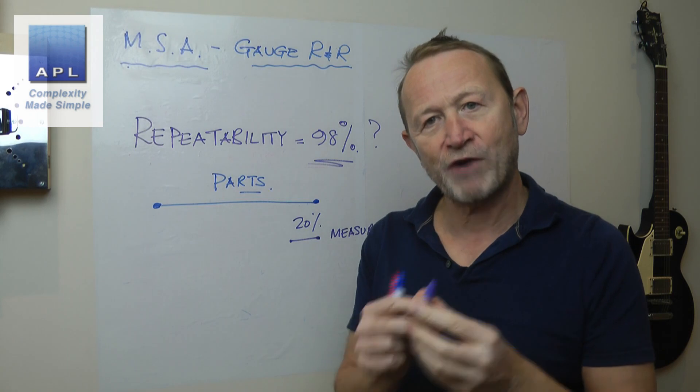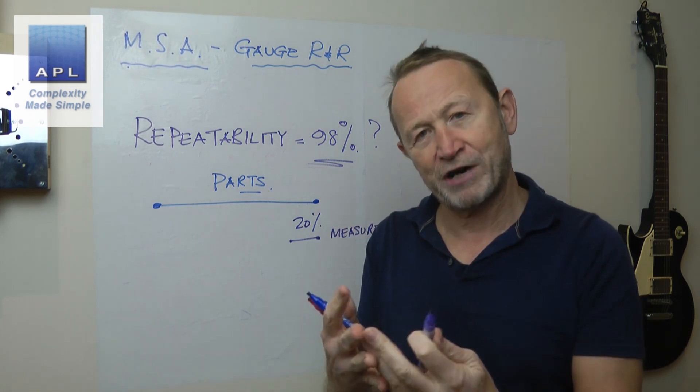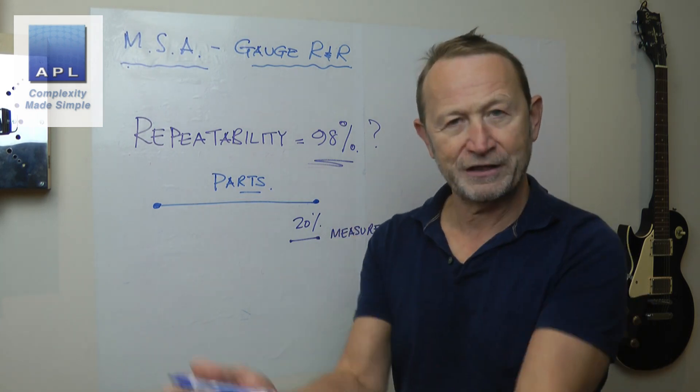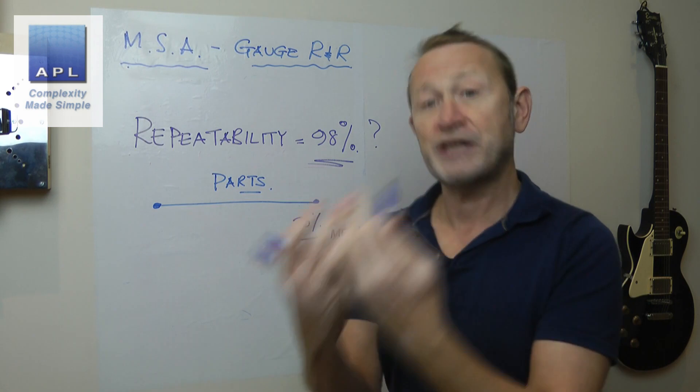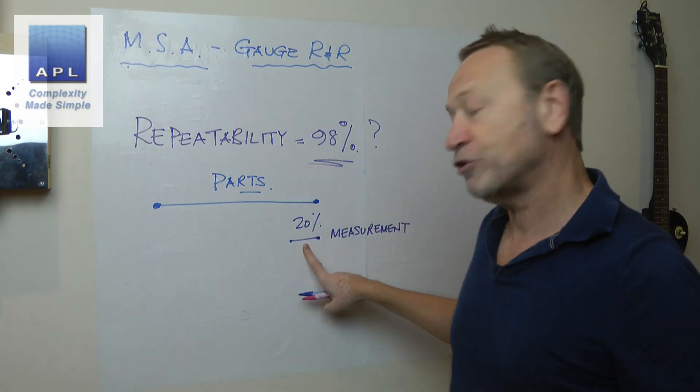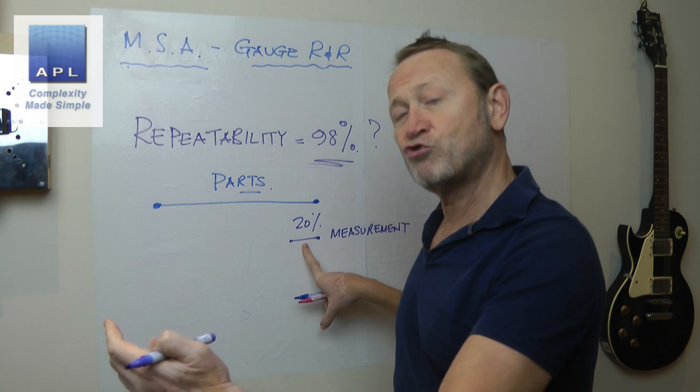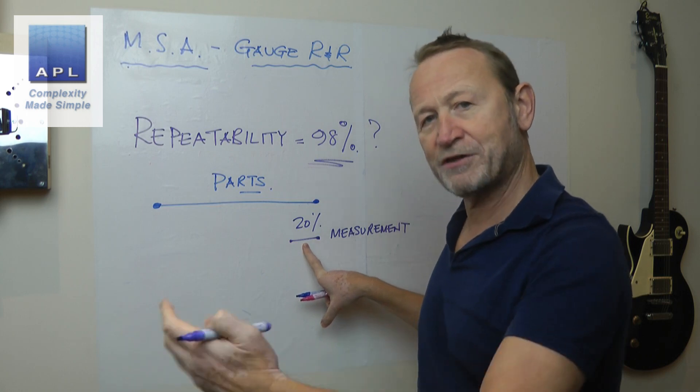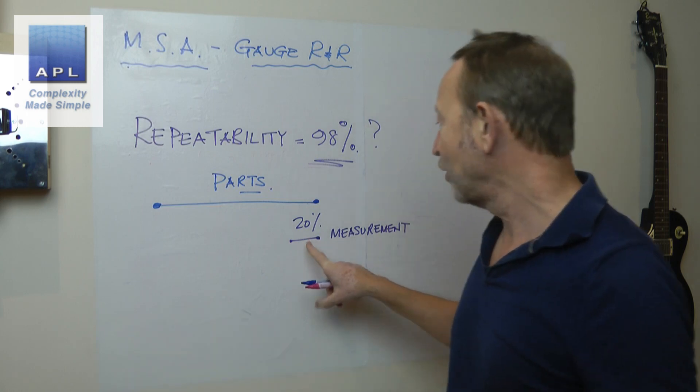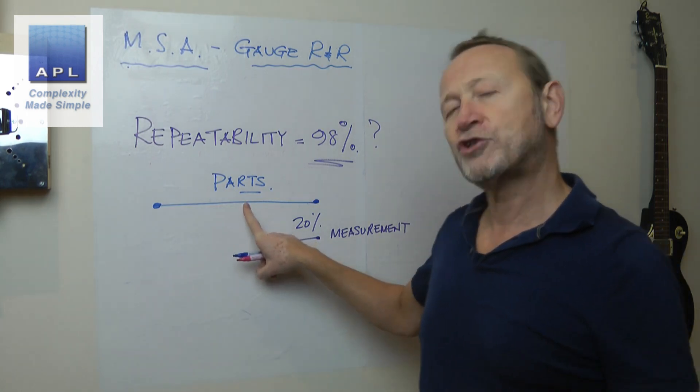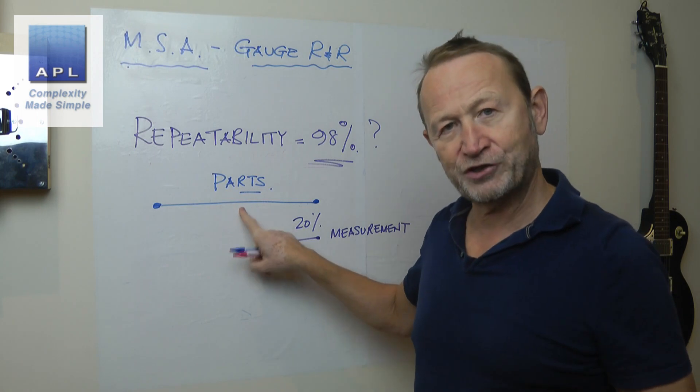So because it's a ratio, you can change the ratio by affecting the MSA in two ways. I could make the variability bigger here, maybe by introducing more people into the MSA, perhaps. Or I could artificially change this.